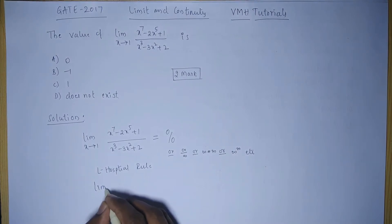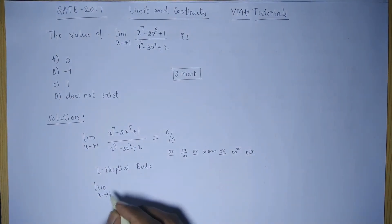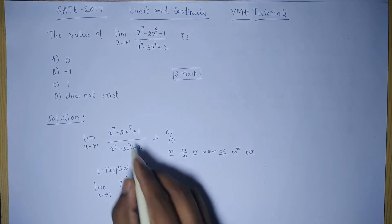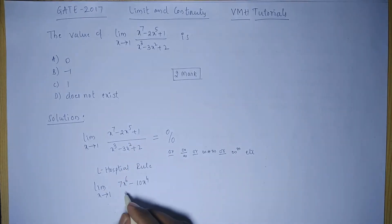So, in this case, limit as x tends to 1: x^7 becomes 7x^6. The differentiation of 2x^5 is 10x^4. The differentiation of the constant is 0. Divided by: x^3 is 3x^2, minus 3x^2 is 6x, and the differentiation of the constant equals 0.